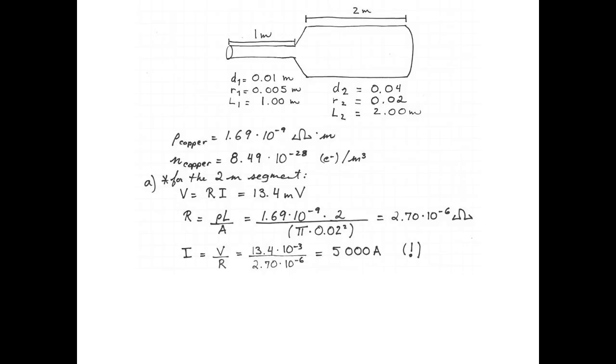Now let's find the resistance of the 1 m segment, once again using ρL/A. Resistivity 1.69 × 10^-9, multiplied by the 1 m length, divided by the area of the rod, π times the radius, half a centimeter squared. And we get 21.5 micro-ohms.